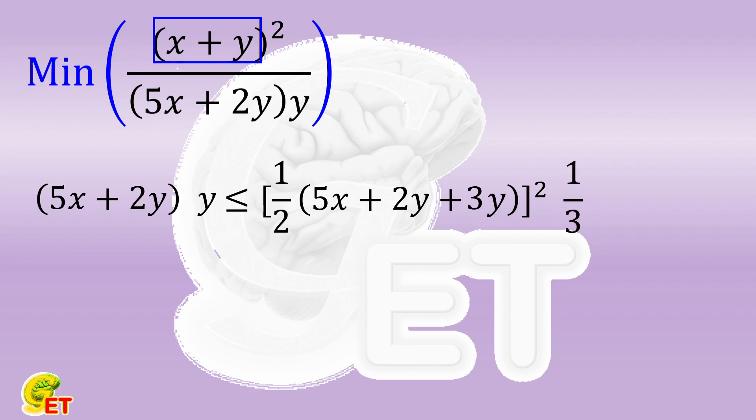Next, we have to check whether they can really be equal in some cases. The answer is yes. When 5x + 2y equals 3y, they are equal. That is, y equals 5x, which meets all our requirements for x and y—namely that both x and y are positive real numbers. No problem.